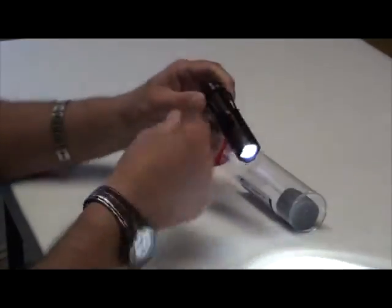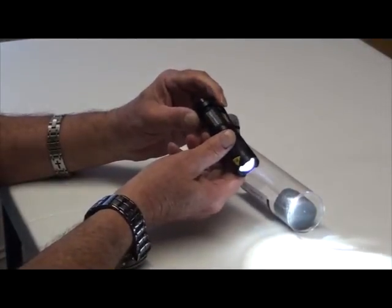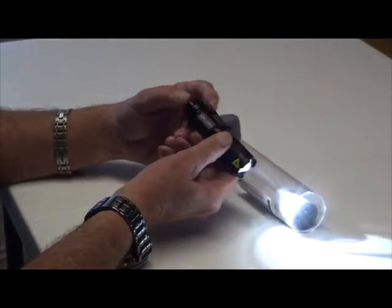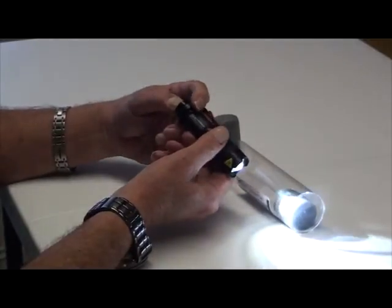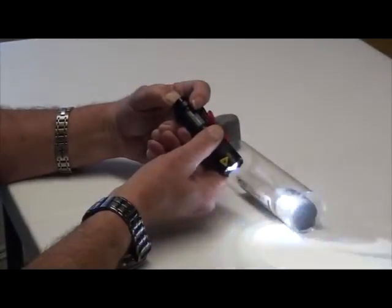And that for the most part is the operation of the Nightbeam 200. It's a pretty simple flashlight, good for the pocket. It has a one year warranty. If you have any problems, just give us a call.